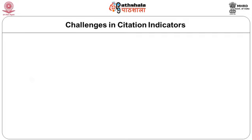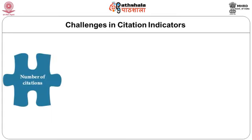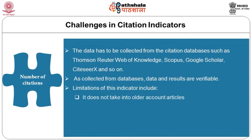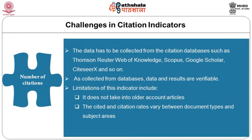Under citation indicators, the first indicator is the number of citations itself — the total number of references received from other works, i.e., the number of citations to articles published by an analyzed unit during the analyzed time span. It is generally accepted that the number of citations a particular article receives is a reflection of its impact in the scientific community. The data has to be collected from citation databases such as Thomson and Reuters Web of Knowledge, Scopus, Google Scholar, CiteSeer X, and so on. The limitations of this indicator include that it does not account for older articles being usually more cited, that citation rates vary between document types and subject areas, and that it does not compensate for the size of the unit.